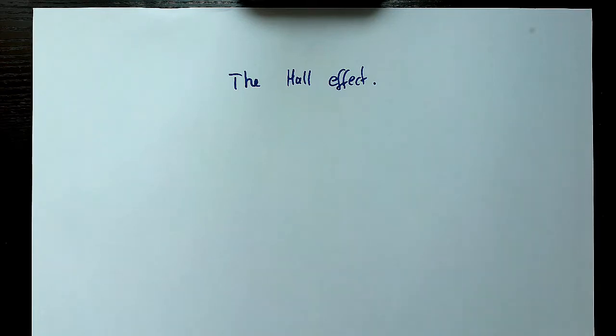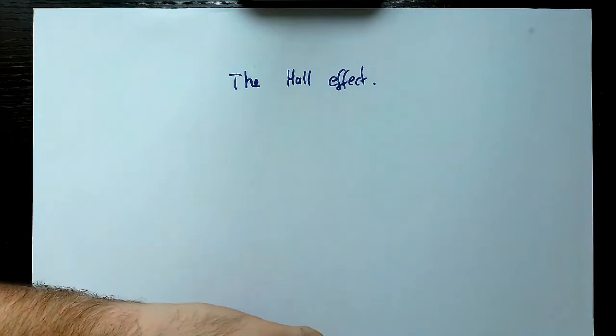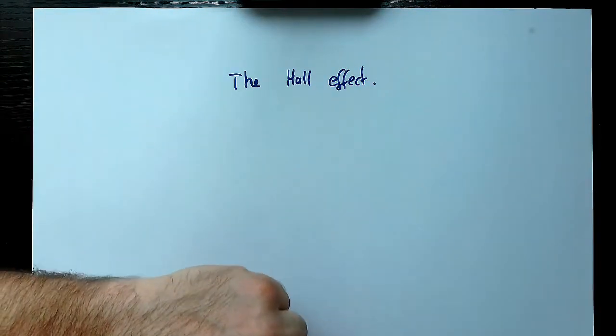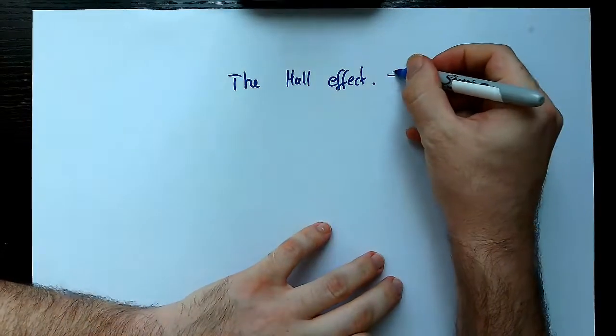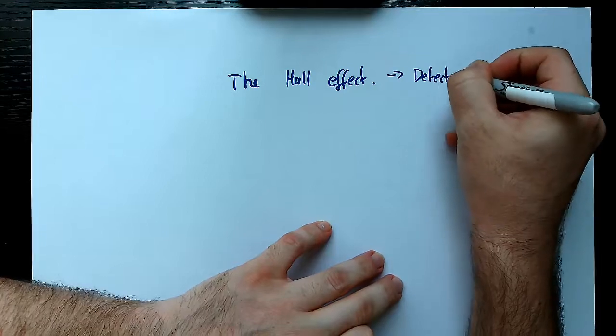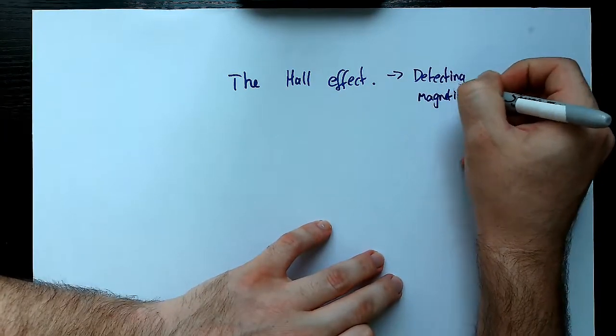Alright, in this video we're going to talk about the Hall effect. Now, the Hall effect is based on the interaction of magnetic fields. We use the Hall effect in probes to basically observe magnetic fields or detect magnetic fields. It's used for detecting magnetic fields.